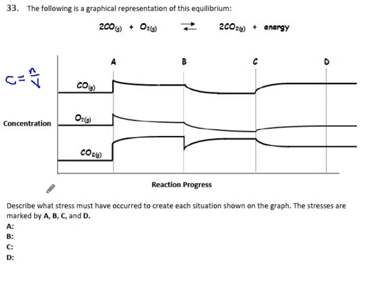So for stress A, they're asking what could have happened. Describe what happened at this point in time. I could say either added CO, O2, and carbon dioxide or reduced volume. Either one of those would explain the three spikes.